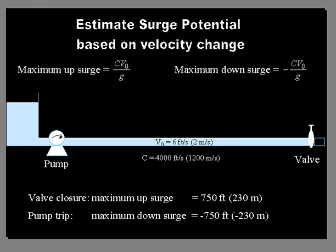Here, we can use this simple approach to estimate the effects of a surge. For example, the maximum upsurge due to the closure of a valve, if you have initial velocity of 6 feet per second or 2 meters, we can calculate it from this simple equation. It would be about 750 feet or 230 meters. The maximum downsurge also is computed based on the velocity change, and that would be minus 750 feet or 230 meters. So it's very significant, and this very simple calculation can help you estimate that.